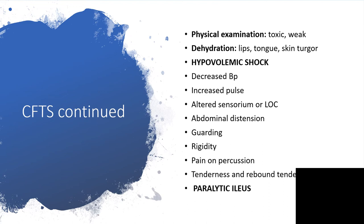Still on clinical features — on physical examination, the individual may appear toxic, particularly if the causative agent is bacterial in origin, and very weak when a lot of electrolytes and fluids have been lost. You may find signs of dehydration through dry lips, tongue, and reduced skin turgor. When hypovolemic shock has set in, there will be decreased blood pressure, increased pulse, altered sensorium, or loss of consciousness. You may also have abdominal distension, guarding, rigidity, pain on percussion, tenderness, and rebound tenderness, depending on the cause.